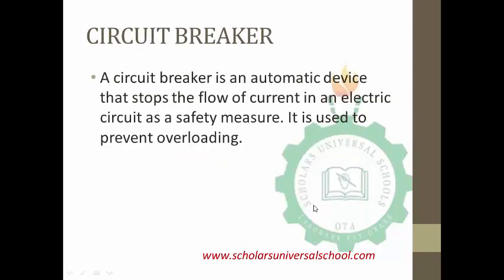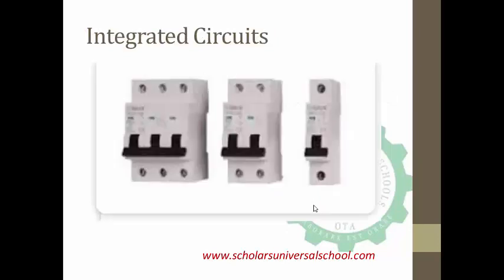The next device we will be talking about is the circuit breaker. A circuit breaker is an automatic device that stops the flow of current in an electric circuit as a safety measure. Most of us are familiar with circuit breakers, as they are found in our generator sets and in our homes. Once the electric power coming in is greater than what the circuit can carry, the circuit breaker automatically switches off on its own to avoid overloading and burning the circuit. Displayed here are pictures of circuit breakers in one-phase, two-phase, and three-phase configurations.